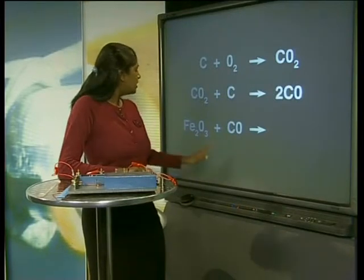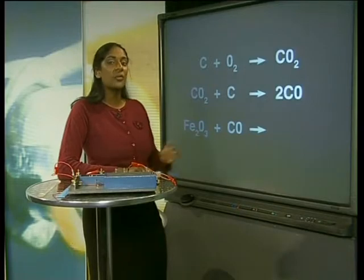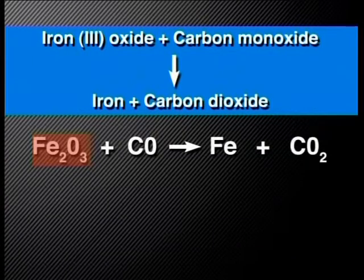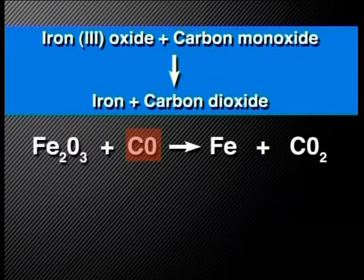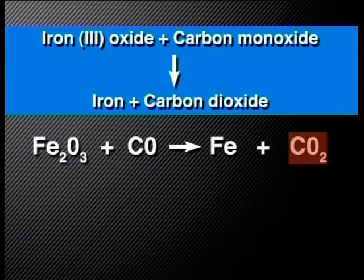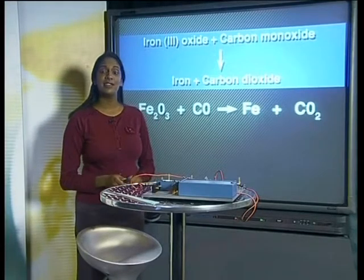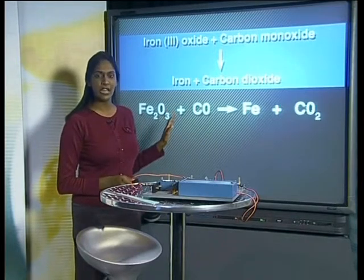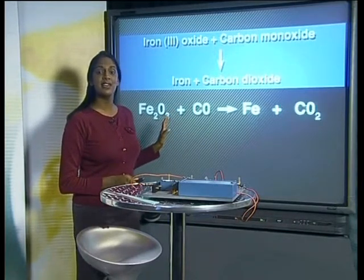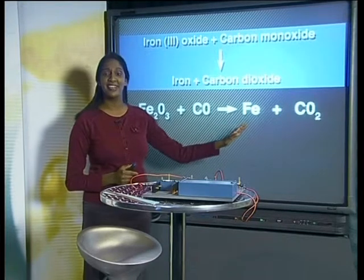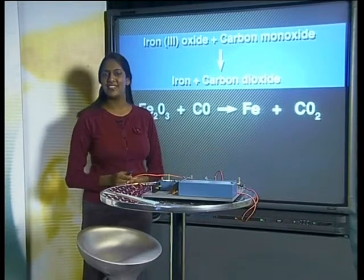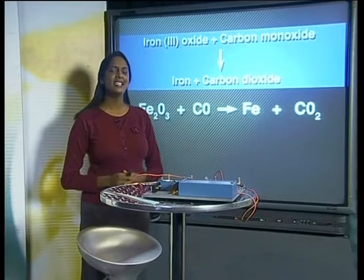Let's check out this reaction of iron oxide and carbon monoxide. Iron oxide is written as Fe2O3. Carbon monoxide is written as CO. Iron has the symbol Fe and carbon dioxide is CO2. Next, we check to see if the equation is balanced by counting the number of atoms of each element that act as reactants and the number of atoms of each element in the products. It is always a good idea to record this type of data in a table.